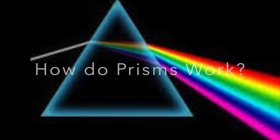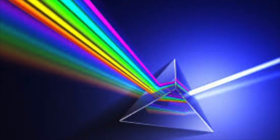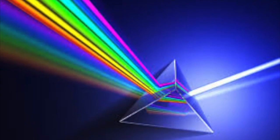Prisms are able to create a spectrum of color from white light because they use refraction. You might ask, what is refraction?